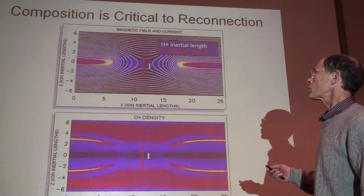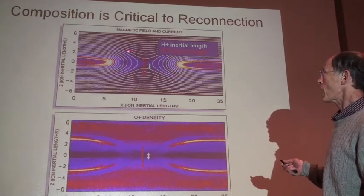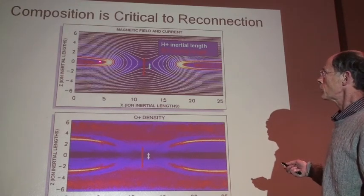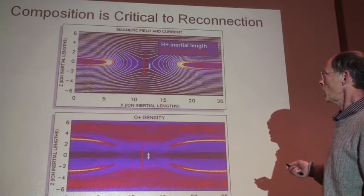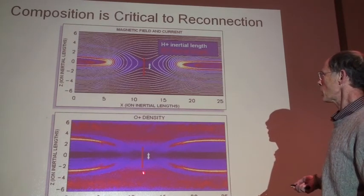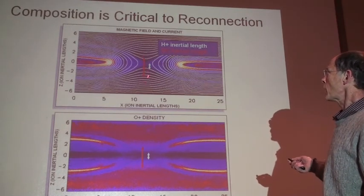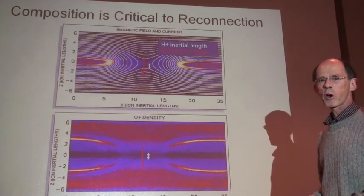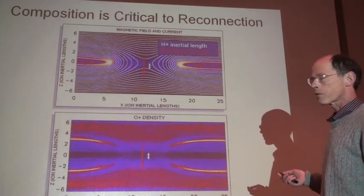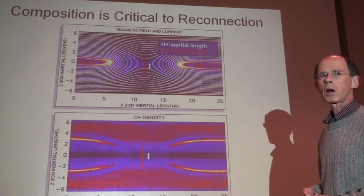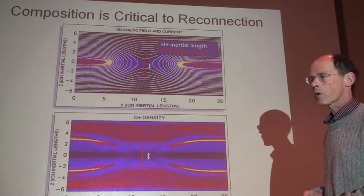This shows the schematic of reconnection. These are magnetic field lines. These are currents flowing out of the board. These two arrows here and here show the relative scale sizes of the oxygen ions and the hydrogen ions. You can see they're very different from each other, and they affect the operation of reconnection in very different ways.